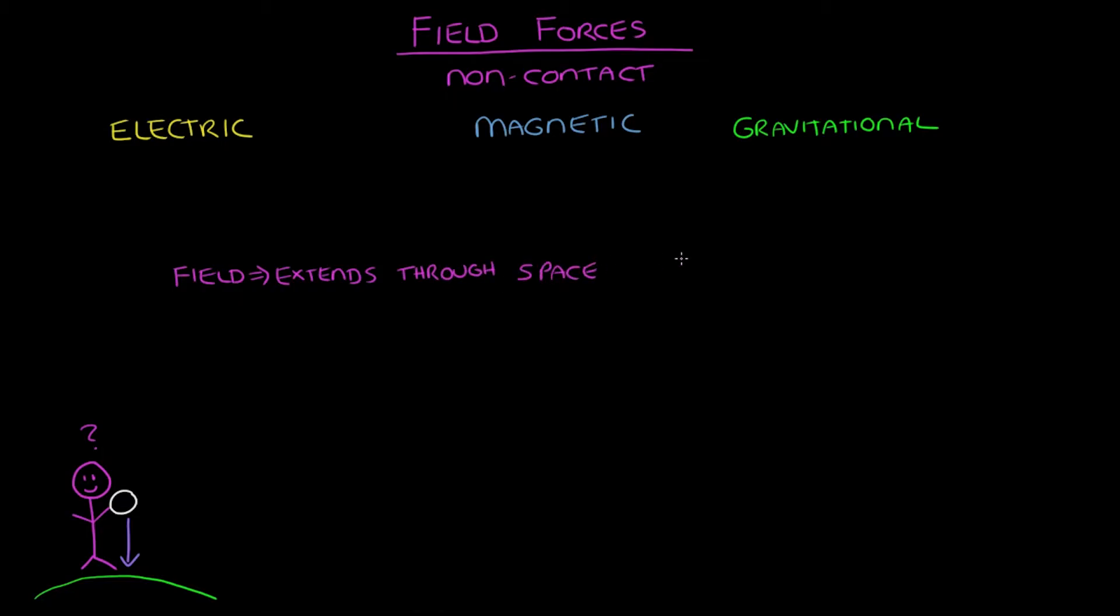For gravitational forces, these affect objects with mass. So any object with mass has a gravitational field surrounding it that points towards the object center. The further you move away from the object, the less dense the field and weaker the field becomes.